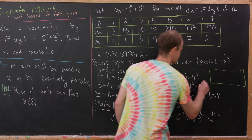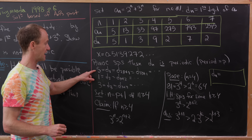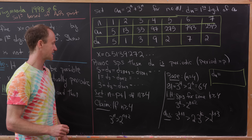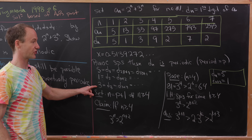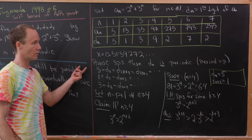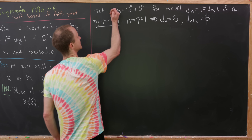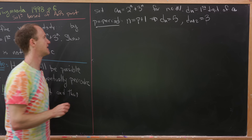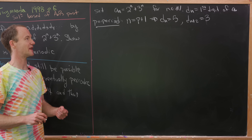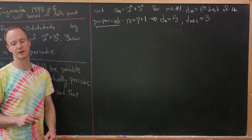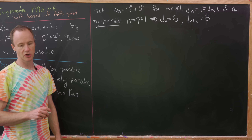Under this setup, d_n = 5, because n is one period past d_1. And d_{n+2} = 3, because it is two positions past d_1. There was a small typo on the last board where I said d_{n+2} = 1, but it is clearly equal to 3.